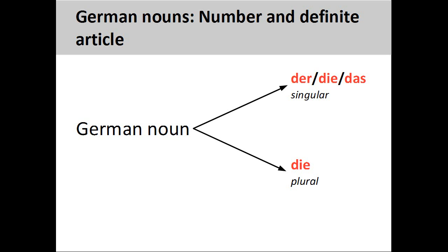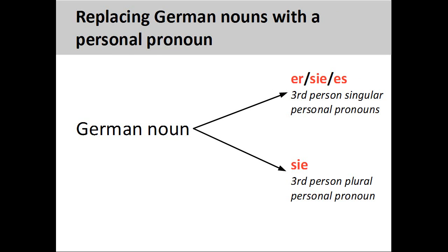There is also a definite article, die, for plural nouns. In German, we can replace nouns with third person singular and plural personal pronouns. In the case of singular personal pronouns, this substitution can be based on the biological gender of the noun.